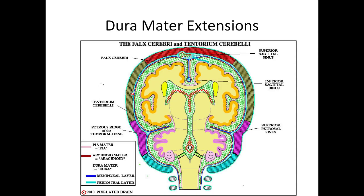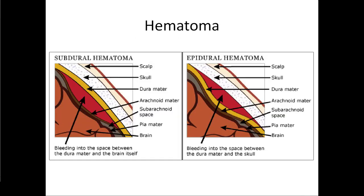You should all remember the meninges surrounding the brain: the dura mater on the outside, the pia mater resting right on top of the brain, and the arachnoid mater in between. This is all really important to protect the brain, but like every form of protection, this can go wrong.